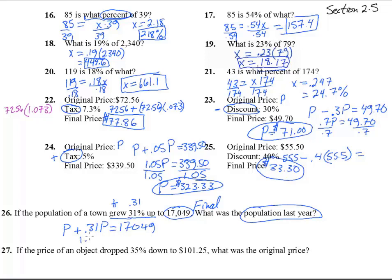This is 1.31P, because there's 1 right here, equals 17049. And divide both sides by 1.31, so 17049, divided by 1.31, equals round to the nearest one, 13,015. That was the original population.